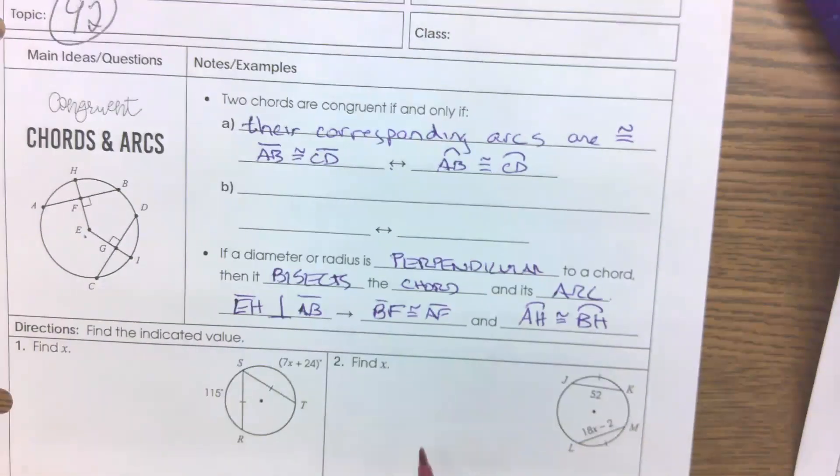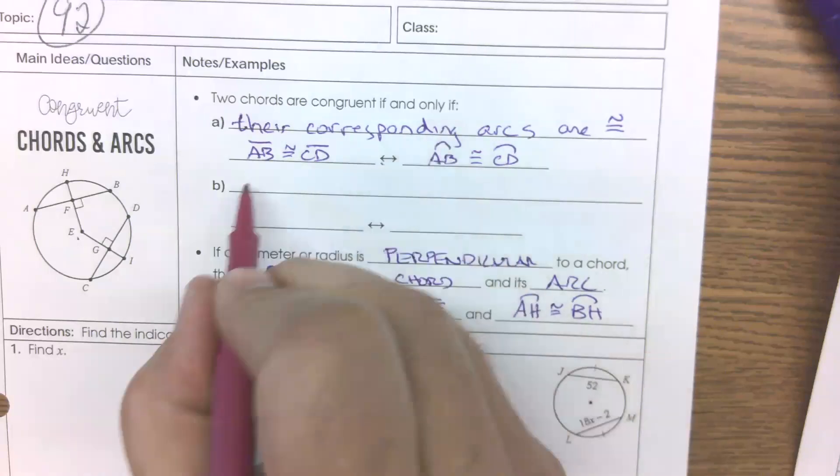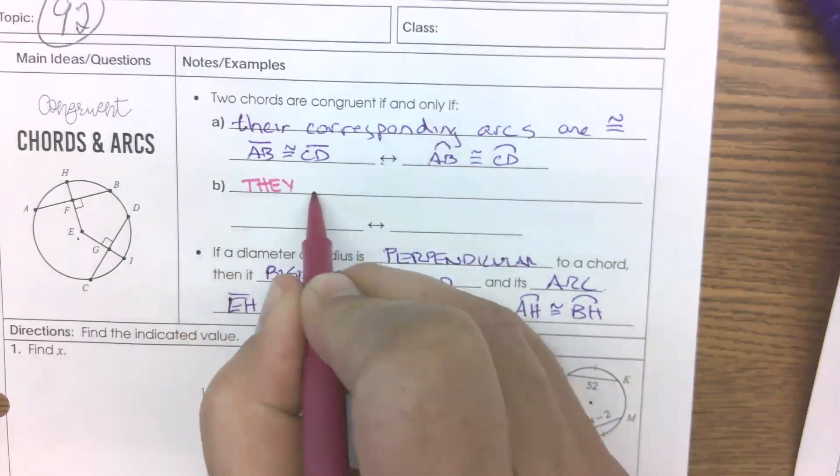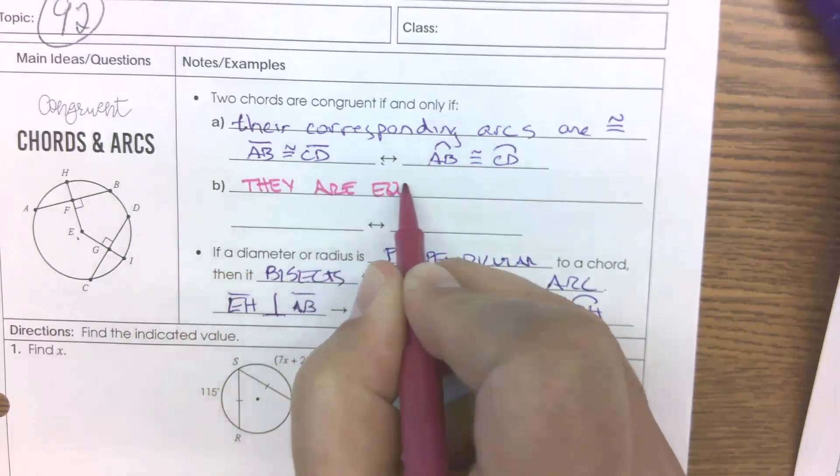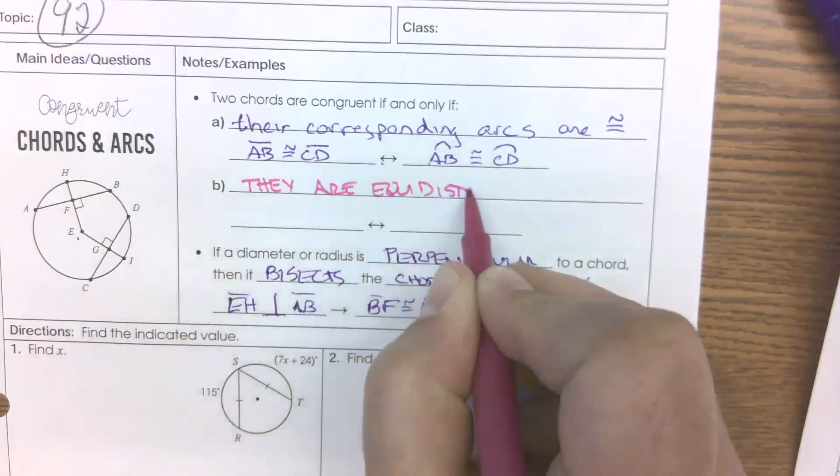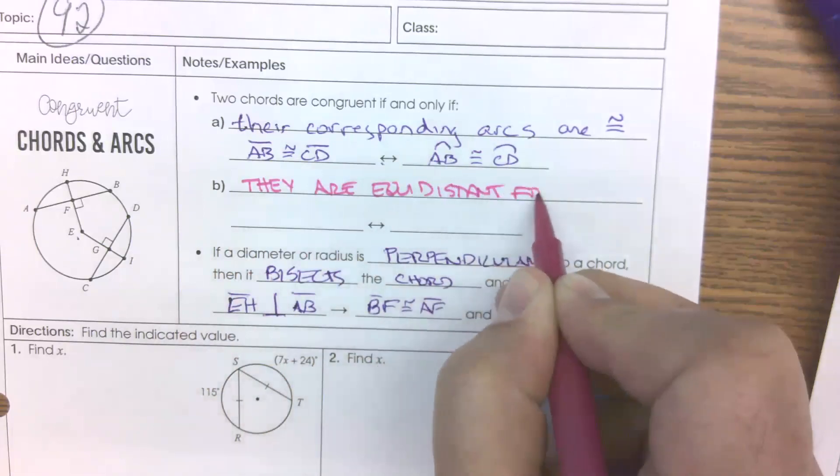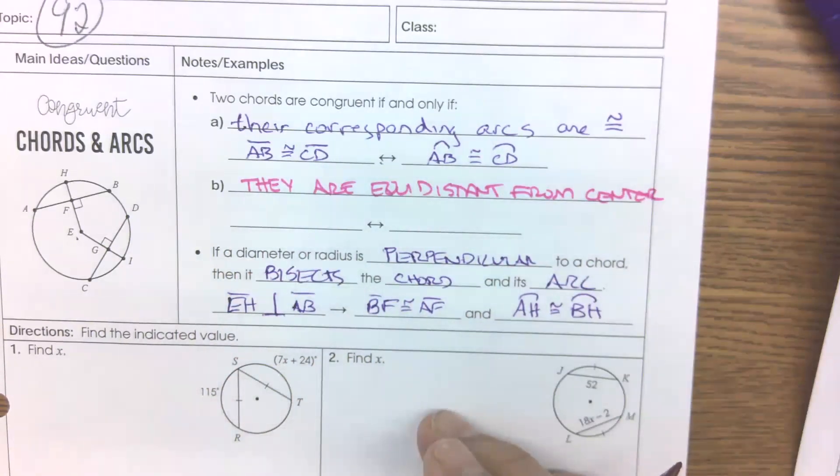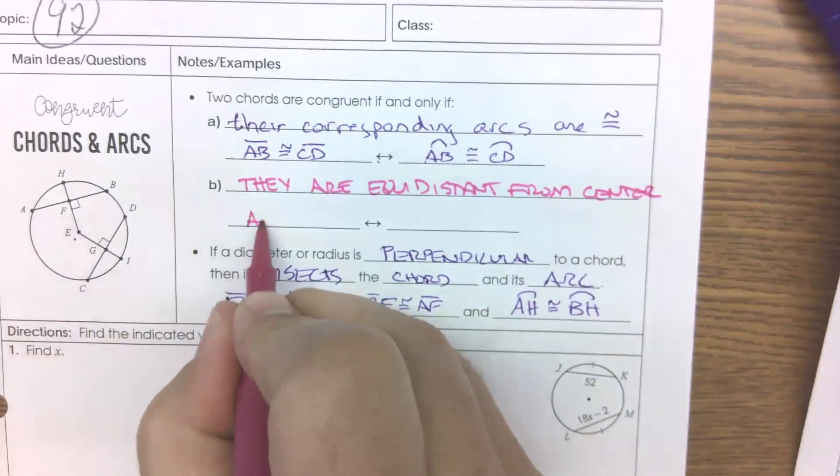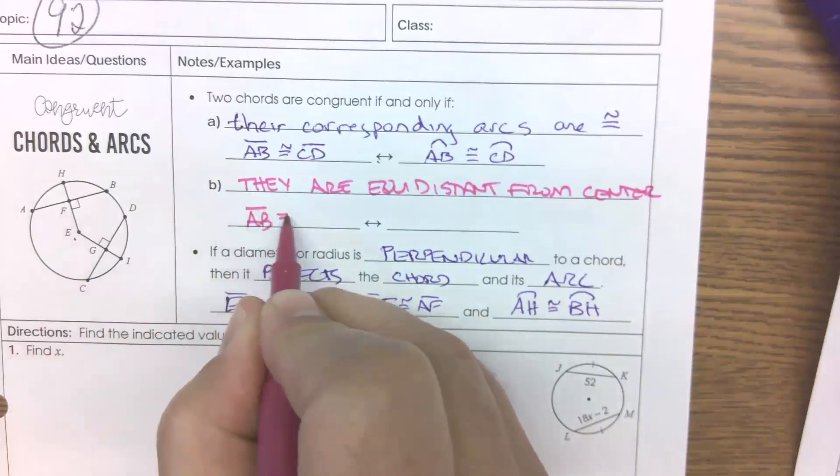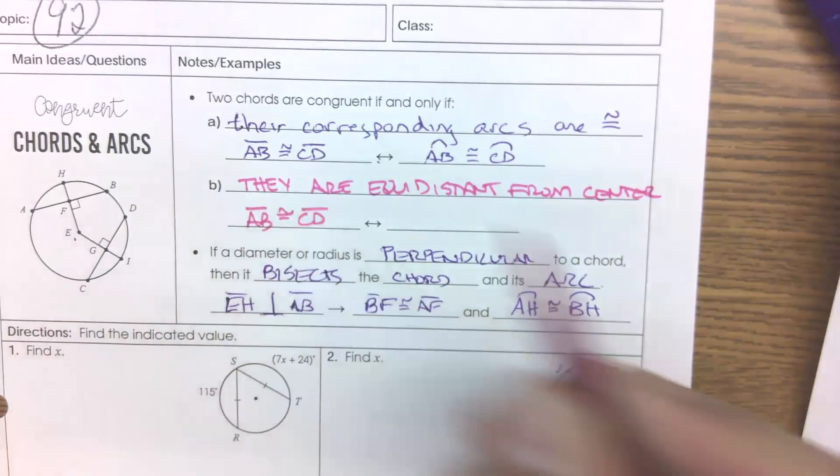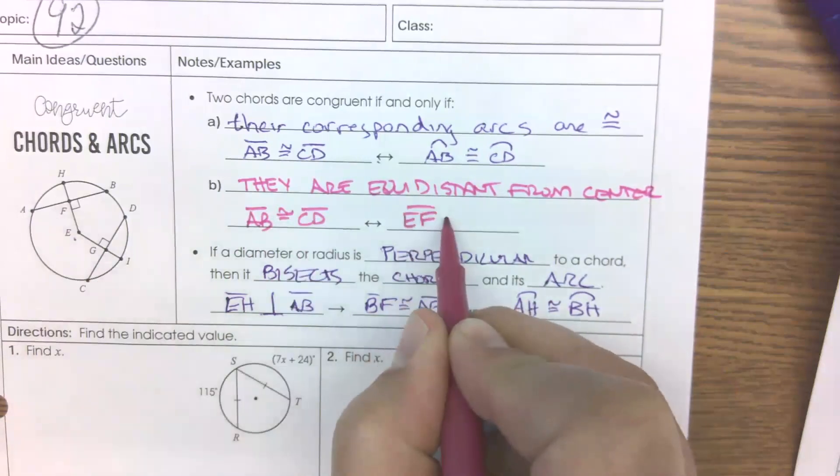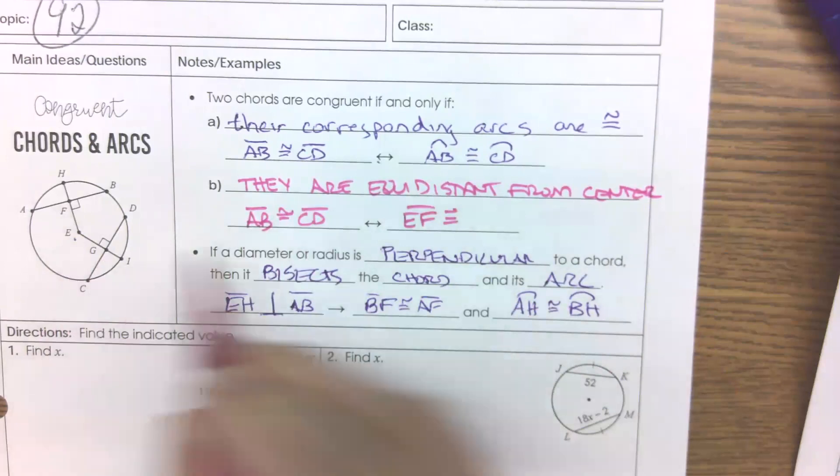So this is the third piece for today's notes. It says that if the two chords are equal, then they are equidistant from the center. In other words, if we know that AB and CD are congruent chords, then the distance, EF, and EG would be the same.